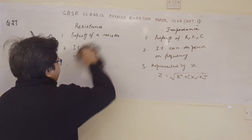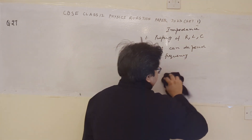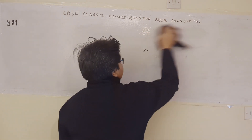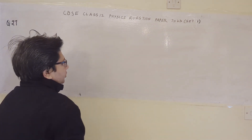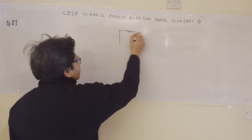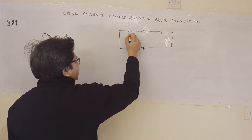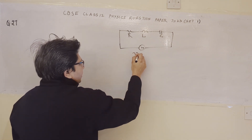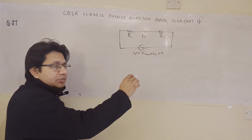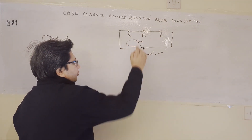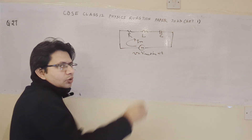Now the second part of the question is to derive an expression for the impedance of a series LCR circuit. The series LCR circuit consists of R, L, and C, energized by V equals to Vm sin(ωt). When energized by this source, a series current Im flows through the circuit, which is common to all three components.